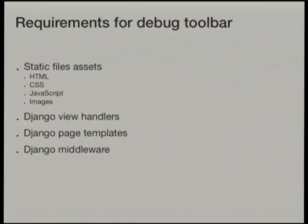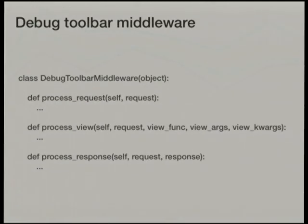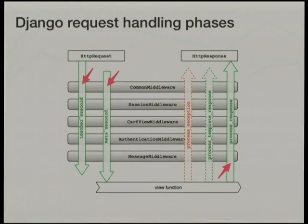What we learned from the explicit configuration steps is that Django debug toolbar depends on a number of key things: static file assets (HTML, CSS, JavaScript and images); a series of view handlers used to produce data for each toolbar panel, which in turn require page templates; and finally, Django middleware. It is the middleware which is the key to the Django debug toolbar working — it allows it to hook into the different phases of request handling: process_request, process_view, and process_response.